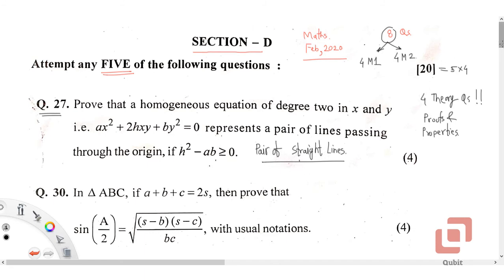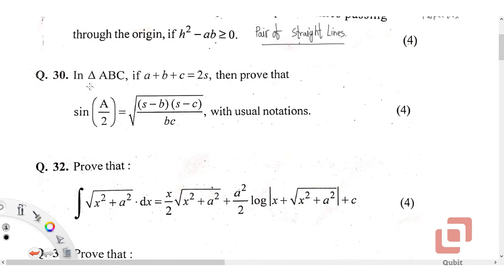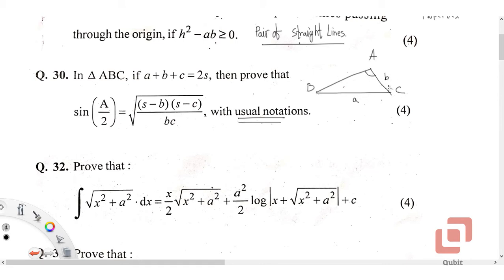Let's go to Question 30. In triangle ABC, if a + b + c = 2s (where s is the semi-perimeter), prove that sin(A/2) = √[(s−b)(s−c) / bc] with usual notations. The notations used are: side opposite to angle A is denoted by small a, side opposite to angle B by small b, and side opposite to angle C by small c. This formula is also known as the half-angle formula.